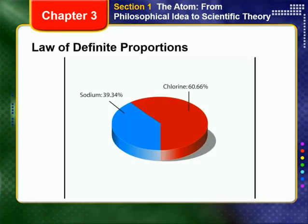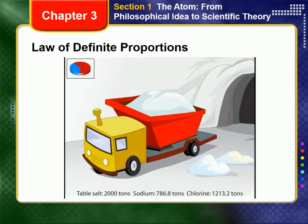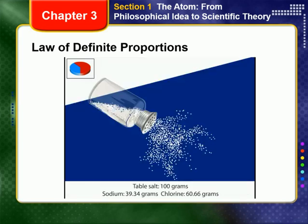For example, sodium chloride consists of 39.34% by mass sodium and 60.66% by mass chlorine, no matter where it comes from. A salt shaker with 100 grams of salt would contain 39.34 grams of sodium and 60.66 grams of chlorine. The proportions are still the same.